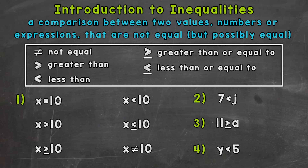The five symbols used to represent inequalities are: not equal, greater than, less than, greater than or equal to, and less than or equal to.